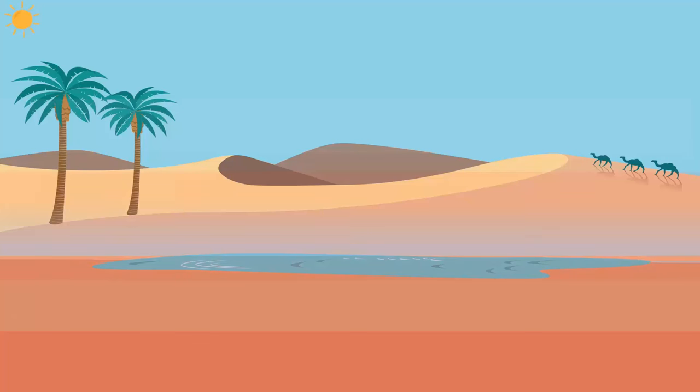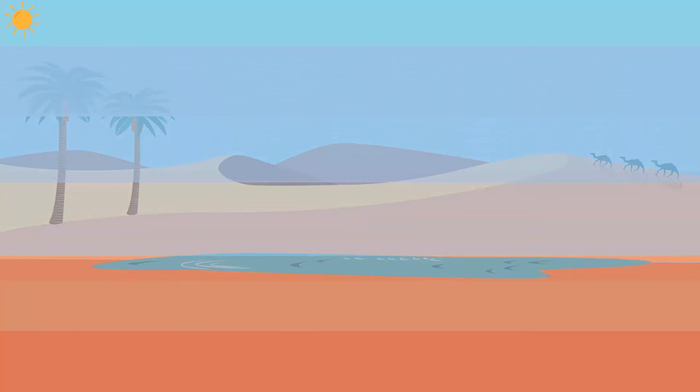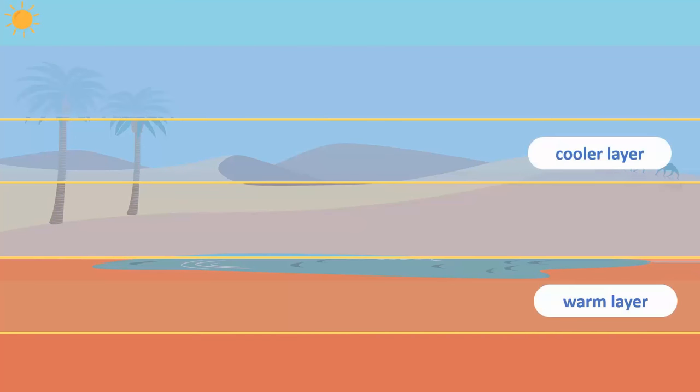On a hot day, the sun heats up the air unevenly. This means we will have numerous layers of air with different temperatures. The layers of air near the ground are hotter than the layers above.